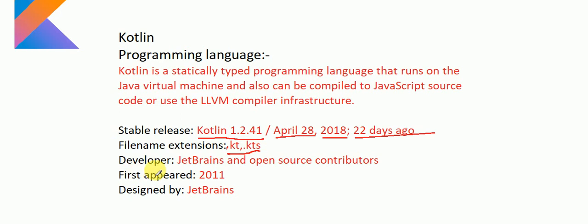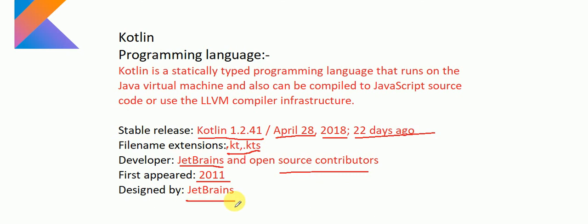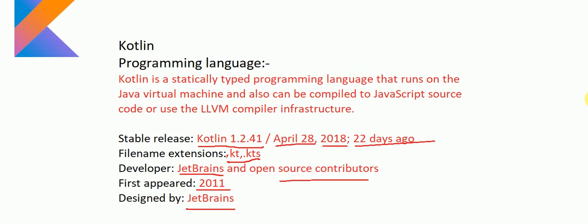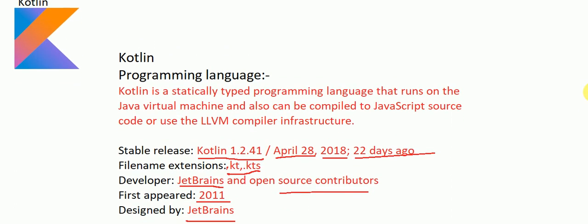And who developed it? JetBrains is the company that developed Kotlin. It was open source and was designed by JetBrains. This is the description of the Kotlin language.